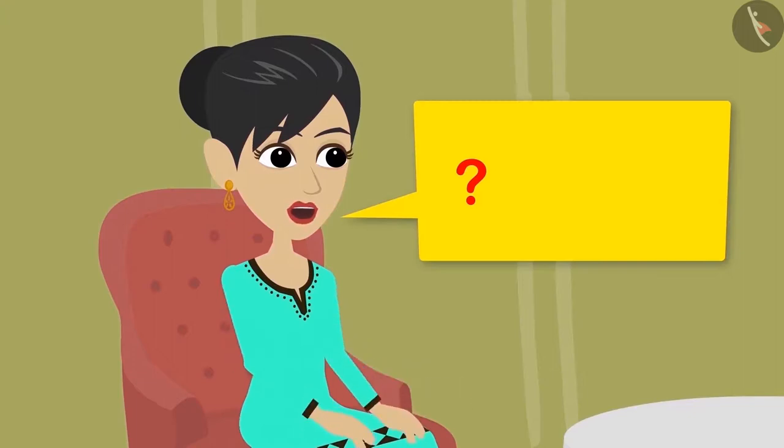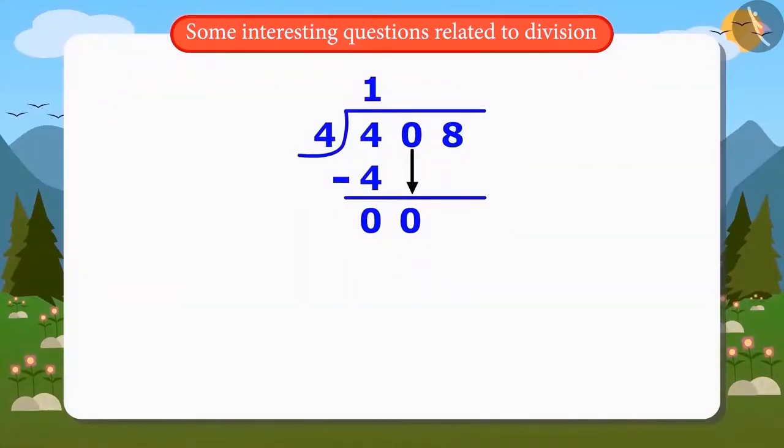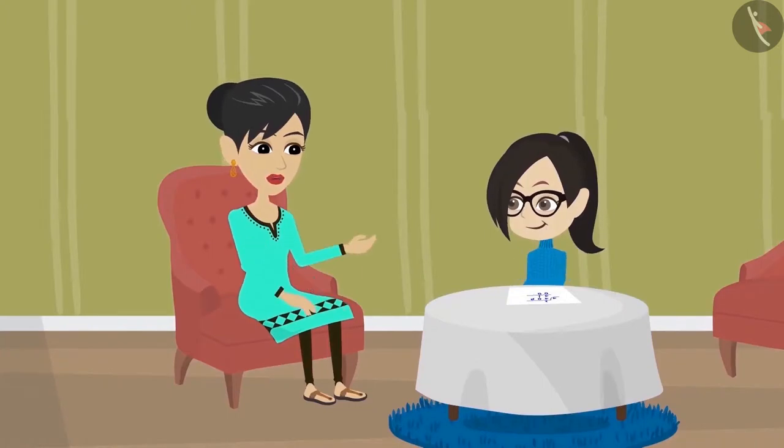Whenever we multiply any number by 0, we get the answer as 0 only. In this way, we will here multiply 4 by 0 and we will get the answer as 0. So the remainder will be 0. Oh, now I understood this. Yes, Vandana, now complete the division to obtain the correct answer.